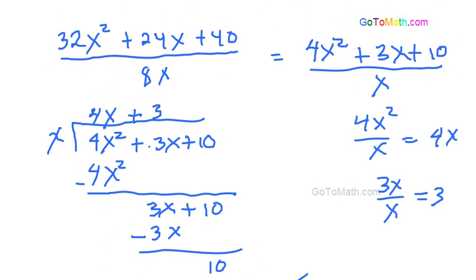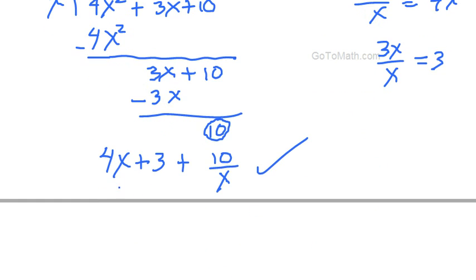And some vocabulary real quick. Remember this was called the divisor and that's known as the dividend. And then the quotient, you have the remainder, which is this number here. And then the quotient is actually the 4x plus 3 and then plus the remainder. So that's your quotient. But just going through some vocabulary there. But this is what we're looking for.